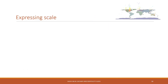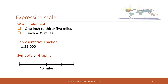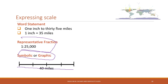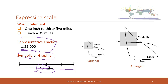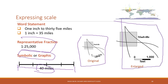When we express scales, there are several ways: a word statement, or you can use a number fraction, or you can use a graphic scale. That means on this screen, this entire length represents 40 miles on the earth. So that's a graphic scale, and graphic scale is the recommended one. The reason is because when you zoom your map in or out, the graphic scale can be enlarged at the same time, so it will always stay true. So graphic scale is always preferred.